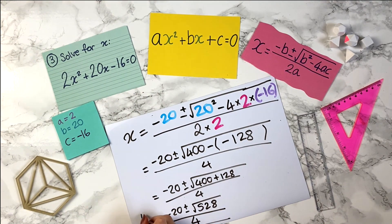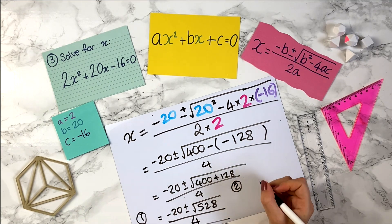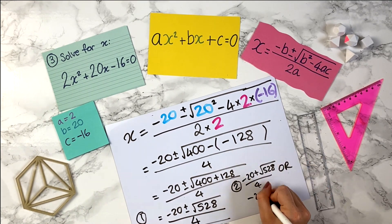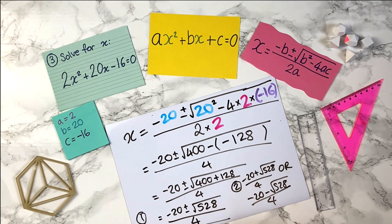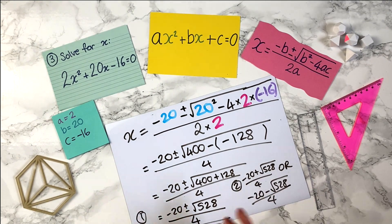So this is version one of how we can leave our answer. We can also write it as minus 20 plus or minus the individual square root over 4. Option 3 is you put it in your calculator and get the decimal places. Option 4 is you see if you can simplify the surd. And once again you can substitute it back into the original equation to check you've got the right answer.